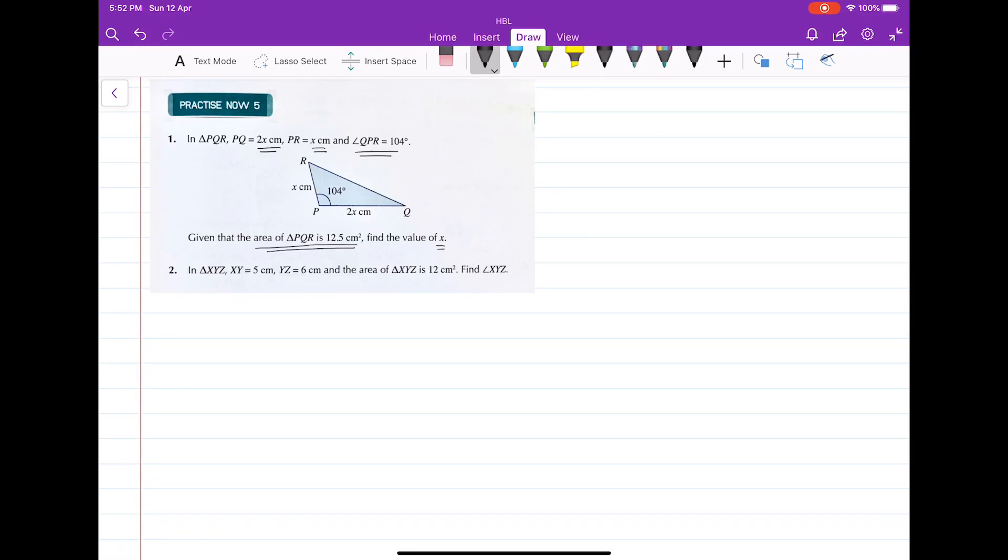In this case, we know that half times PQ times PR sine of angle QPR equals 12.5 cm squared.